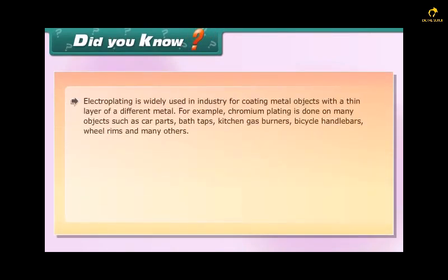Did you know? Electroplating is widely used in industry for coating metal objects with a thin layer of a different metal. For example, chromium plating is done on many objects such as car parts, bath taps, kitchen gas burners, bicycle handlebars, wheel rims, and many others.